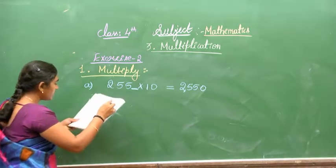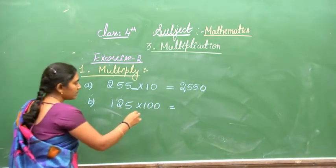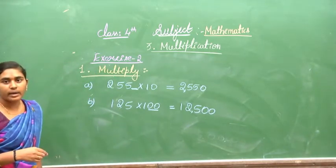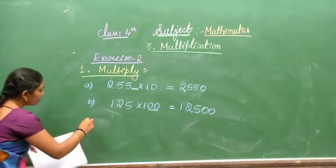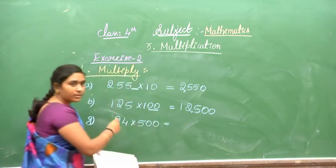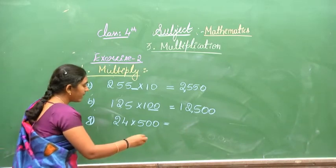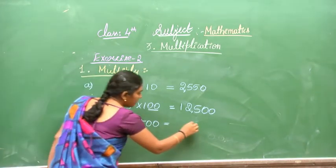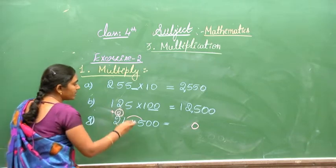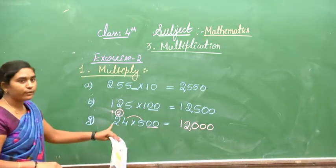Very easy multiplication sums. Next: 125 multiplied by 100. We write two zeros at the end — the answer is 12,500. You carry where necessary: 5 times 5 is 25, write 5 carry 2; 10 plus 2 is 12; then write the zeros. So 12,500.